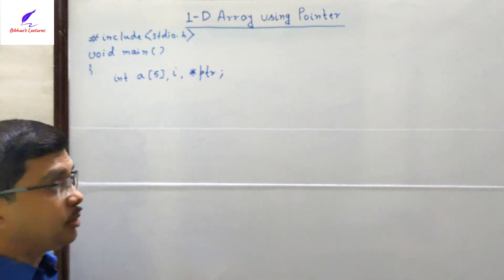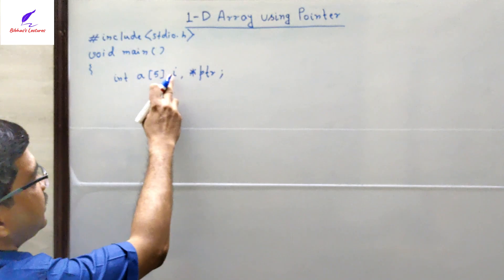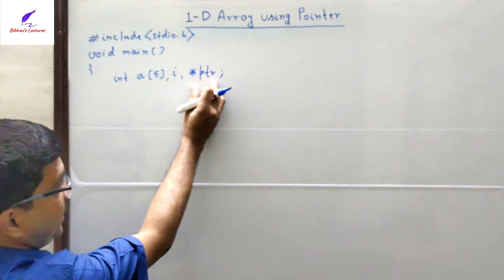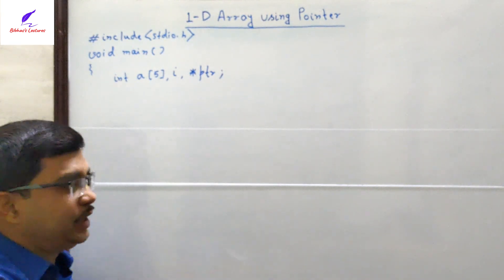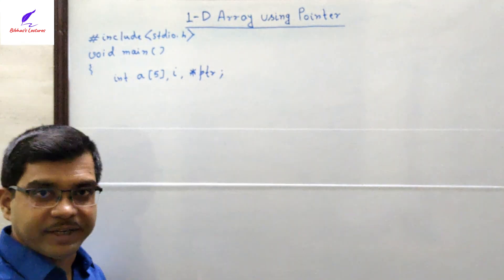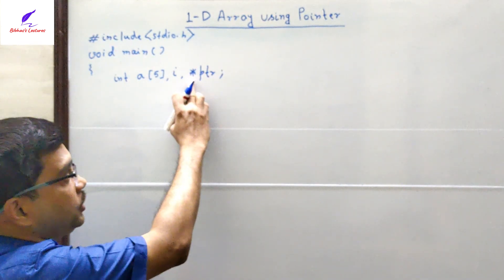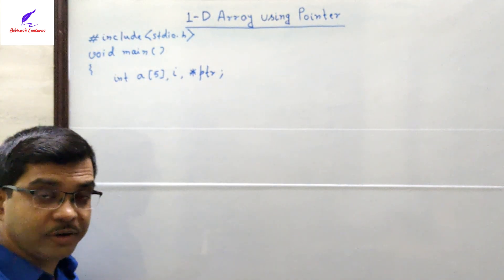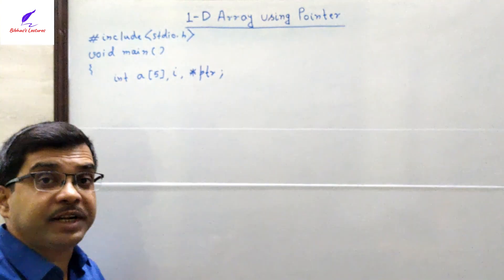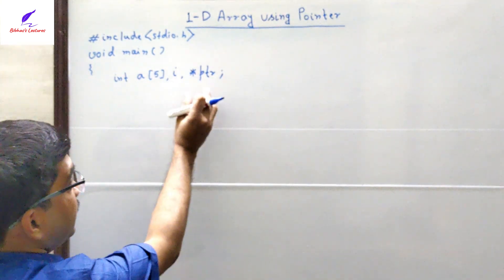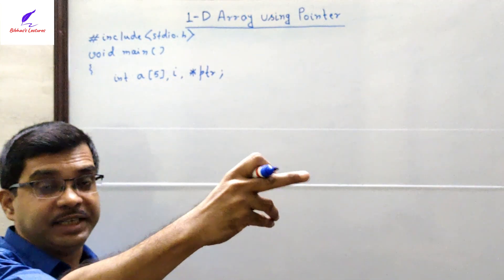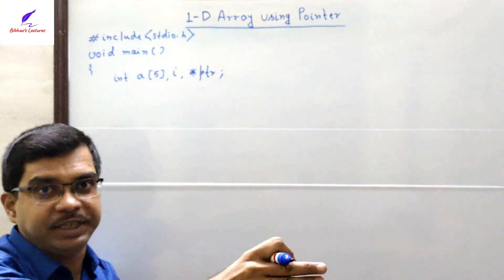The pointer variable is named PTR — an abbreviated form of pointer. PTR is associated with a single asterisk symbol, so PTR is a single pointer. It is declared as int *ptr, meaning PTR is a pointer to an integer. That means PTR can point to an integer variable.